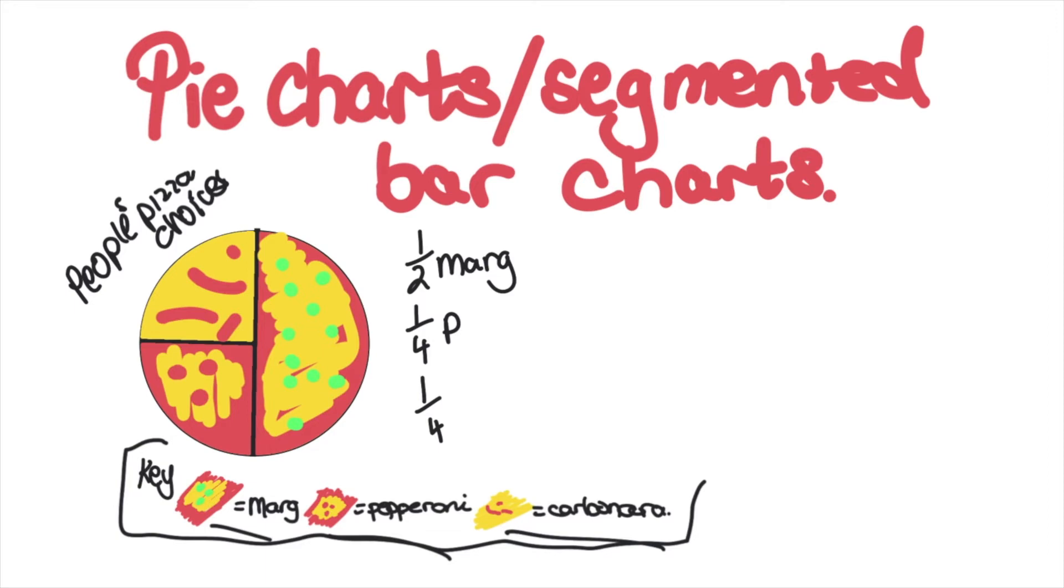What if I told you that this pie chart is made up of 100 people's data? Now we can actually start putting some numbers to this information. If half of these people picked margarita, that means 50 people picked margarita because 50 is half of 100. For the quarters, that's 25 people and 25 people because they are a quarter of 100.